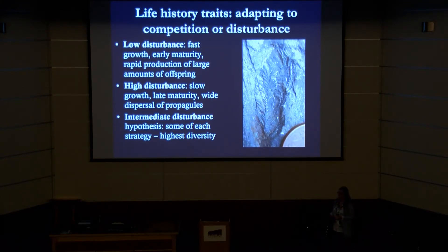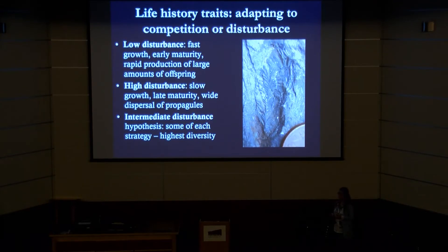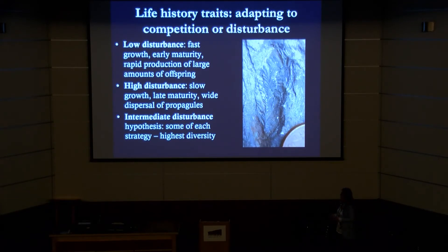A really classic idea in ecology is the intermediate disturbance hypothesis - a Goldilocks zone for diversity, where you get some low-disturbance taxa and some high-disturbance taxa. We thought we'd try and see if we could test this in rangomorph communities.